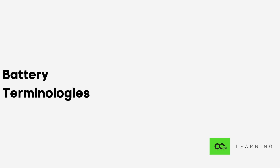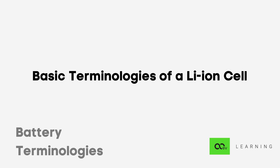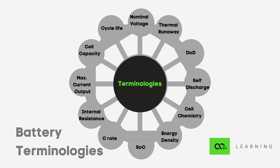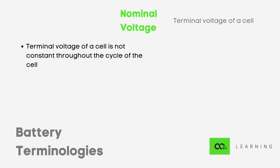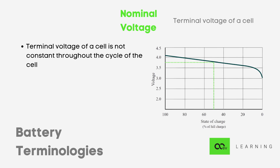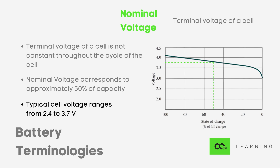Every field of physics has its own set of terminologies to classify its function, and lithium-ion is no exception. There are 12 basic terminologies that we need to study. The first and foremost is the nominal voltage of the cell. The open circuit voltage of a cell varies throughout the cycle, so nominal cell voltage corresponds to the voltage at almost 50% of capacity, ranging from 2.4 to 3.7 volts.